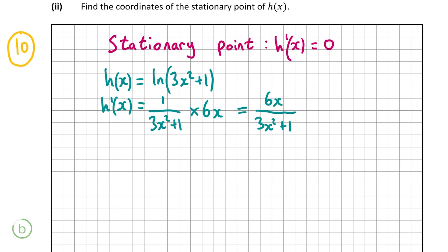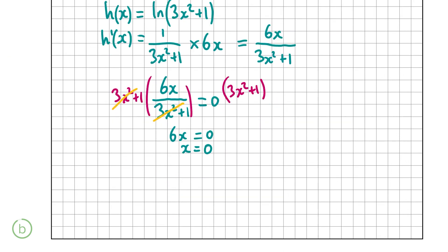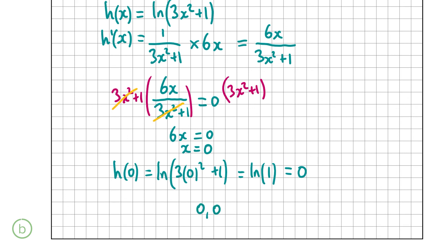The derivative of 3x² + 1 is 6x, giving h′(x) = 6x / (3x² + 1). Now we set that equal to zero to find the stationary points. Multiplying both sides by (3x² + 1), the denominator cancels on the left and zero times any number is zero, so we get 6x = 0, meaning x = 0. To find the coordinates, we substitute 0 back into h(x): h(0) = ln(3 × 0² + 1) = ln(1) = 0. So the coordinate of the stationary point is (0, 0).